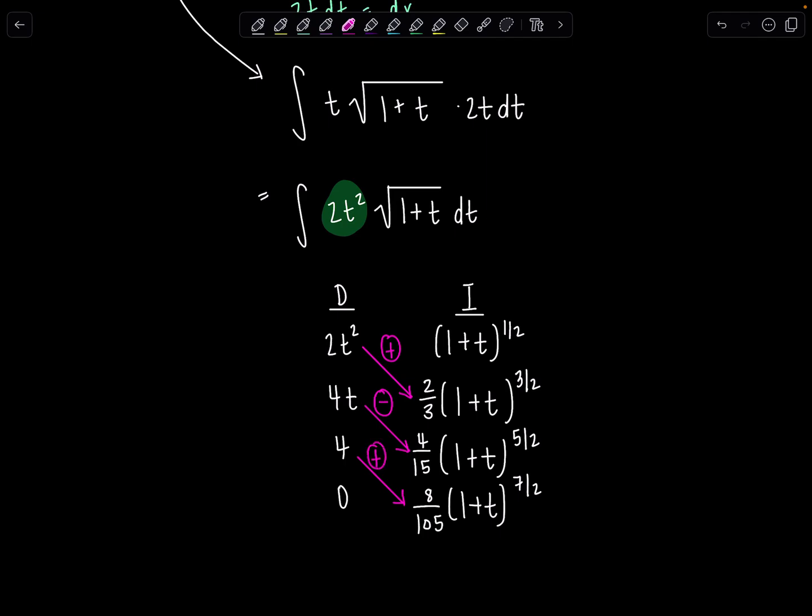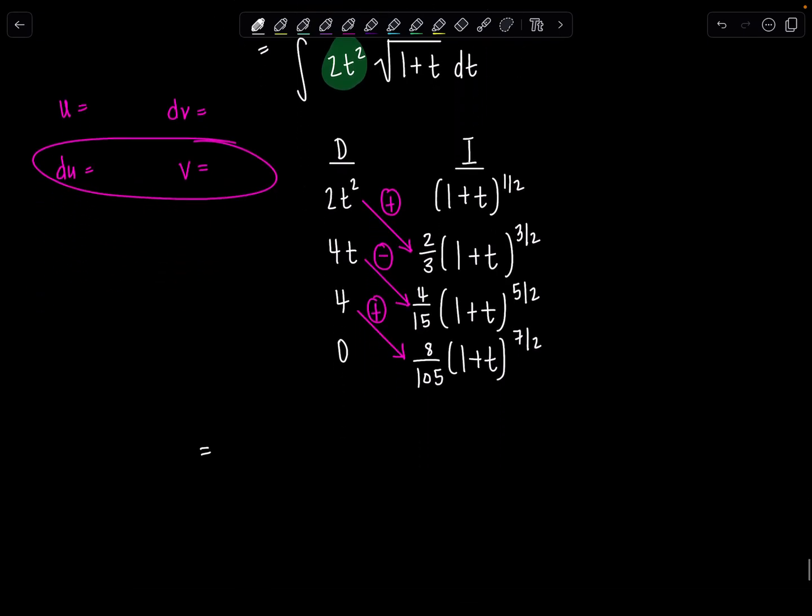This is because in your normal by parts when you're setting up, you have minus integral of v du. So that minus sign basically gets nested in here. And then when you do another round, the negatives cancel. So that's why every other one is positive, negative like that. Okay, now let's see what we're going to be left with.